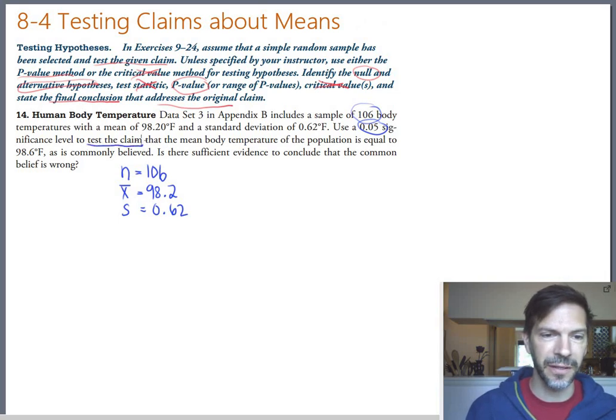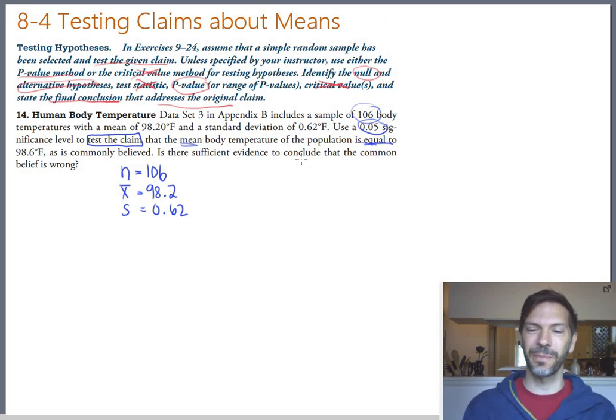Use a 0.05 significance level, that's the normal significance level. Test the claim that, and really here's your key phrase, test the claim that mean body temperature is equal to 98.6, which is what we've all been taught. The claim is that the mean is 98.6. Is there evidence to conclude that that's wrong?